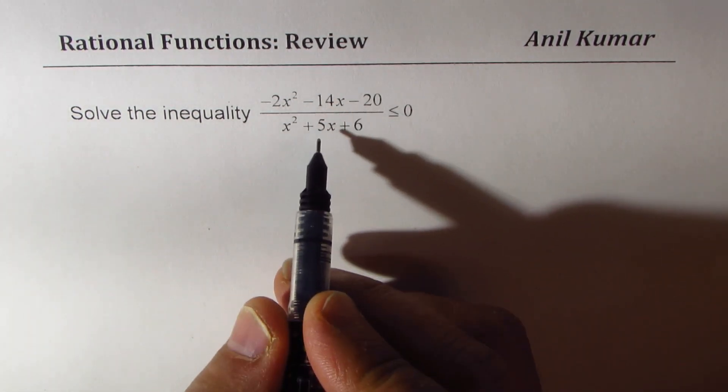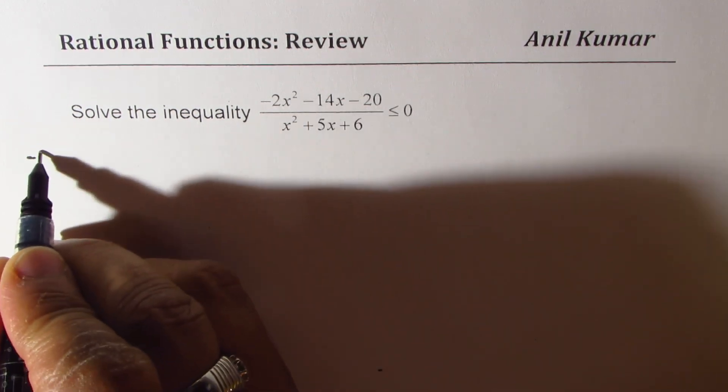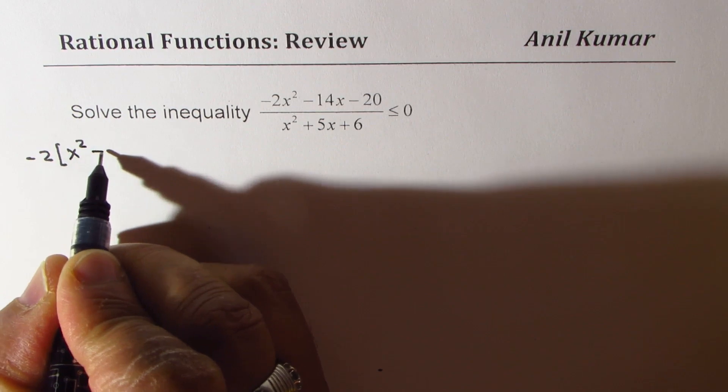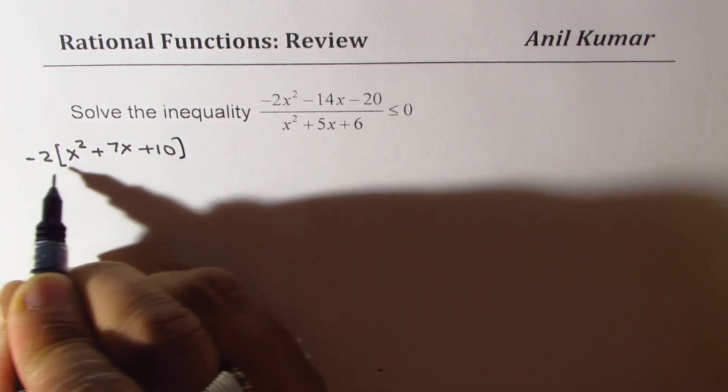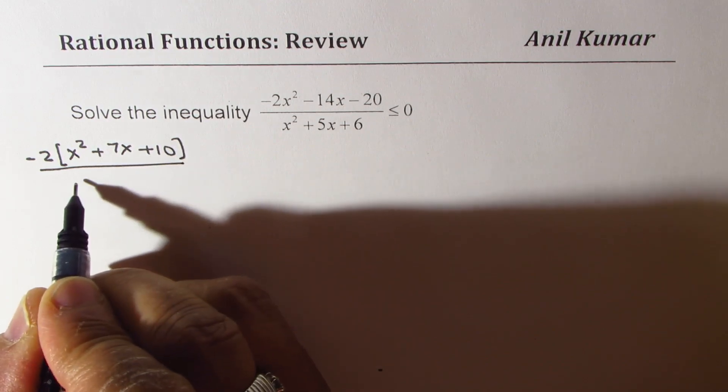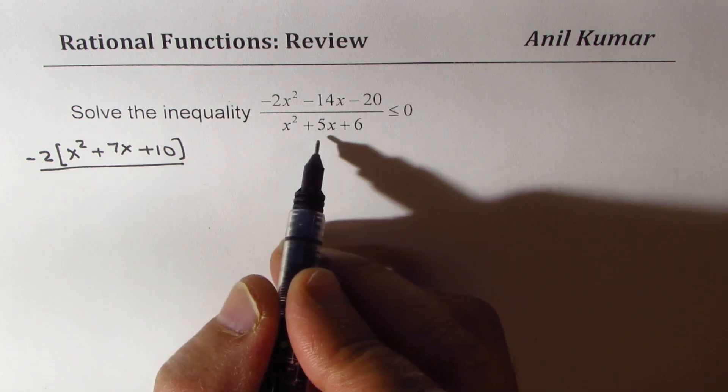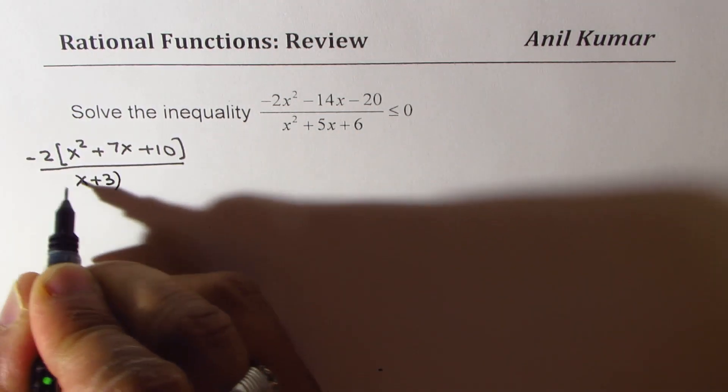Now first step is to factor numerator and denominator. So we get minus 2 common in the numerator. That gives us x square plus 7x plus 10 and the denominator is product of 6 sum of 5. So that gives us 3 times 2.